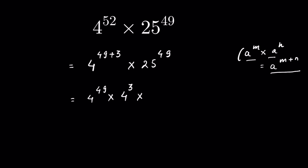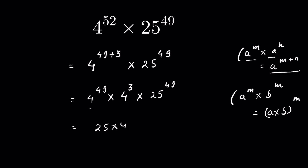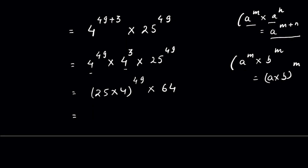And then 25 to the power 49. Now we have two numbers with the same exponent. There is an expression: if a to the power m times b to the power m, then we can write it as (a times b) whole to the power m. So we can take 25 and 4 together: 25 times 4, whole to the power 49.